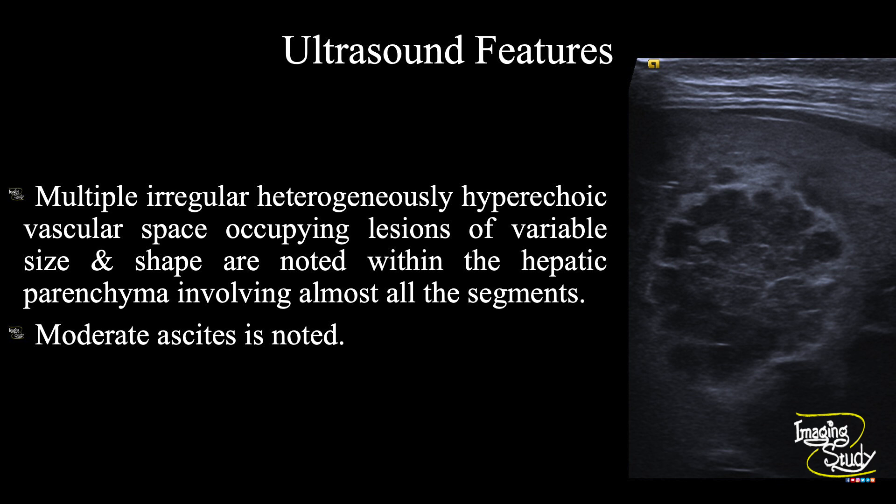In summary, multiple irregular heterogeneously hypoechoic vascular space-occupying lesions of variable size and shape are noted within the hepatic parenchyma involving almost all the segments. Peritoneal collection is also present. These features conclude it as a case of hepatic metastasis.